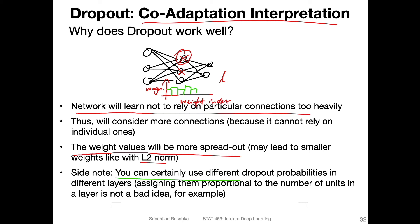You can certainly use different dropout probabilities for different layers. You don't have to use 50% for every hidden layer — you can use 20%, 80%, and so forth. It's another hyperparameter to choose through experimentation. 50% was the original value used in the paper, but nowadays people also use 20% or 80%, and that might be something to experiment with.